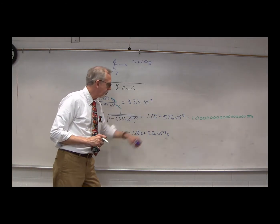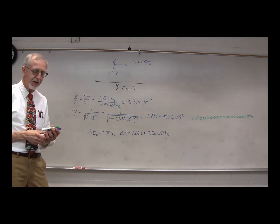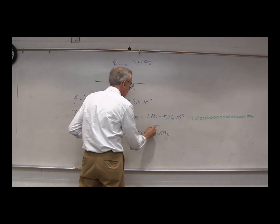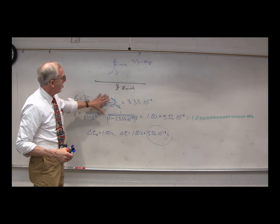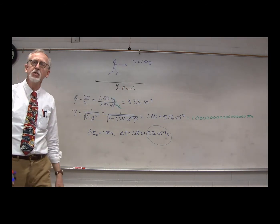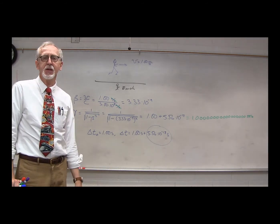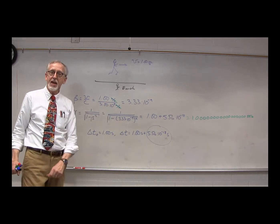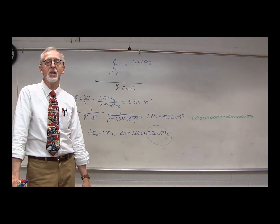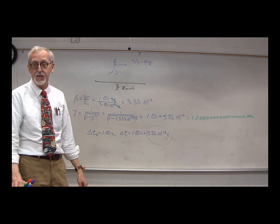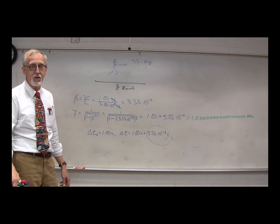So basically a number that is extremely close to 1. If delta T naught were 1 second, delta T would be 1 second plus 5.56 times 10 to the minus 18 seconds. That is not a difference we would ever notice. That's why for any ordinary everyday motions — even in a jet plane — the only way we could notice any difference would be with an extremely accurate timepiece like the atomic clocks used to set time standards.